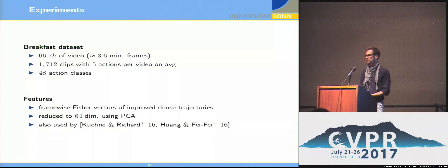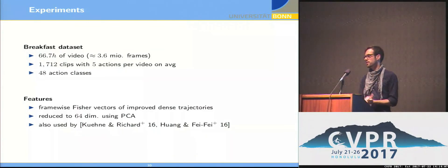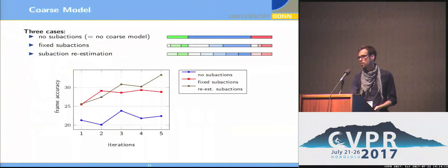Let's have a brief look at some experimental results. We use the breakfast dataset, roughly three and a half million frames and 48 action classes and one and a half thousand or even some more clips. And as features, we use improved dense trajectories, or Fisher vectors of improved dense trajectories which we extract frame-wise. As I already mentioned, deep learning approaches struggle since we do not have any frame-wise annotations. So at the moment, these dense trajectory features still perform equally or slightly better and are also used in all related work.